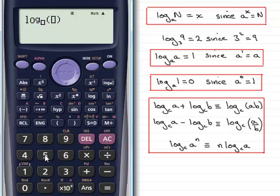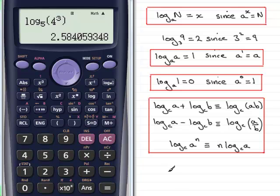Let's say we'll do base 5 and we'll look at 4 to the power 3. So we'll do 4 cubed. There we go. Let's see what that equals. So 2.5840 and so on.